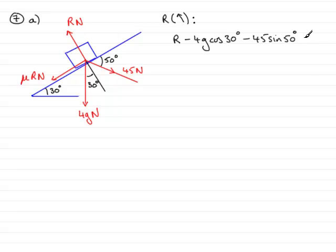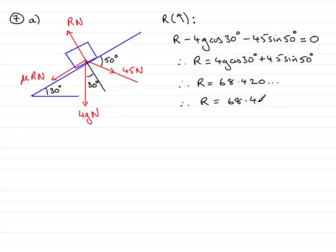The parcel's in equilibrium, so the resultant force will be equal to zero. Rearranging this equation gives R equal to 4g cos 30 plus 45 sine 50. And if you work that out on a calculator, you'll get R equals 68.420 and so on. And rounding that to three significant figures, you get 68.4 newtons. So that's Part A.